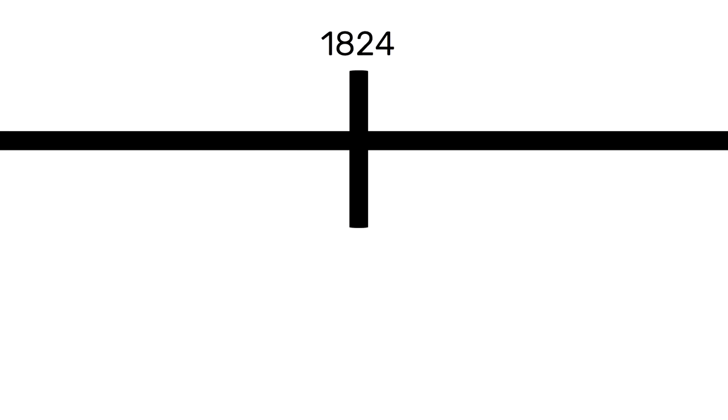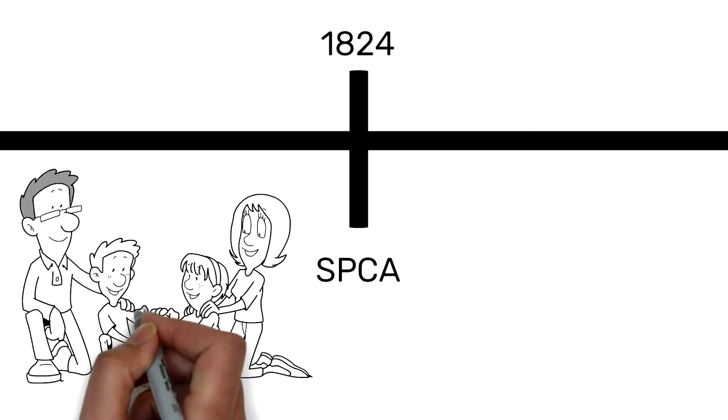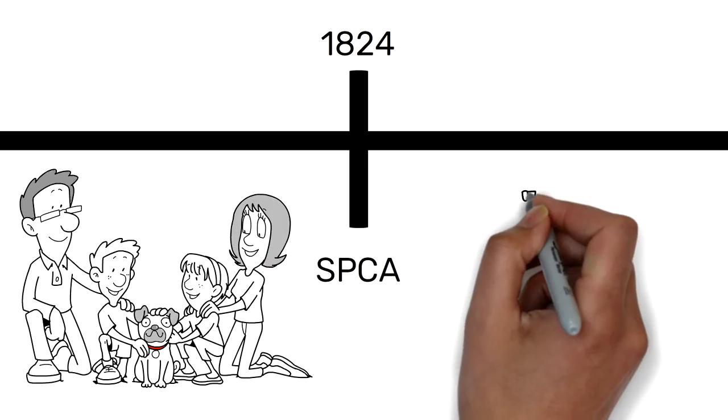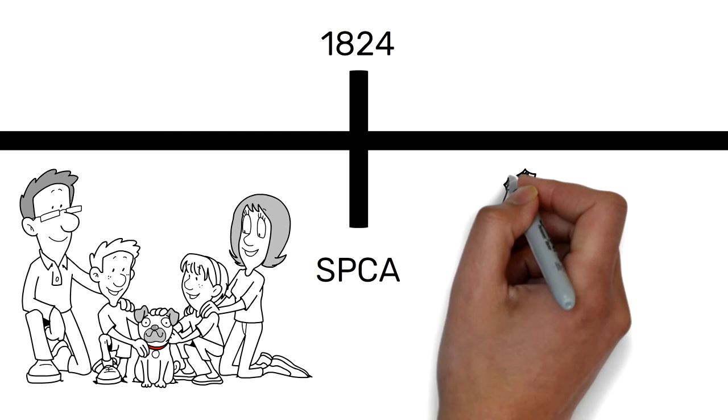In 1824, the Society for the Prevention of Cruelty to Animals, the SPCA, was founded to enforce animal cruelty legislation. This was a second body, separate to the police, and this was specifically for animals.